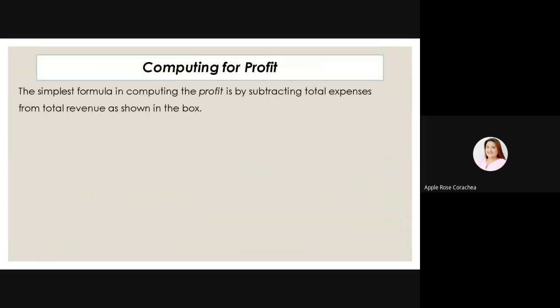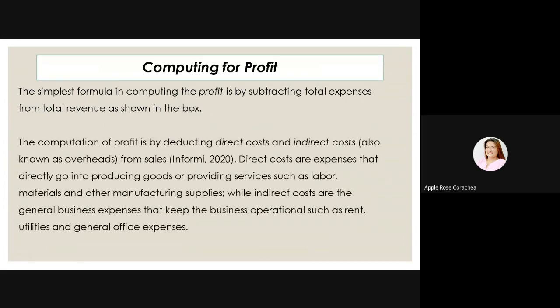Computing for profit — the simplest formula in computing profit is by subtracting total expenses from the total revenue. The computation of profit is by deducting direct costs and indirect costs, also known as overheads, from sales. Direct costs are expenses that directly go into producing goods or providing services such as labor, materials, and other manufacturing supplies. While indirect costs are the general business expenses that keep the business operational such as rent, utilities, and general office expenses.